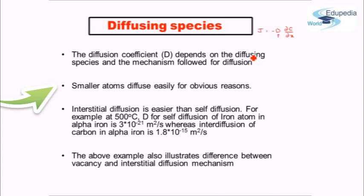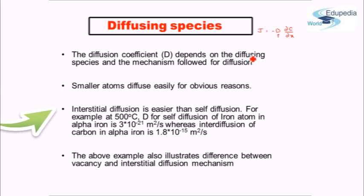Alternatively, for larger atoms, D will be small. If we have small sized atoms taking part in interstitial diffusion, then D will be large. Whereas if any atom is taking part in vacancy diffusion, then since the vacancies are limited, the diffusion coefficient will be small in magnitude. Hence, the diffusion will be slower in rate.